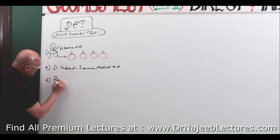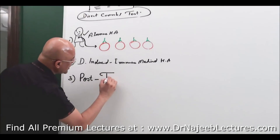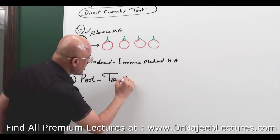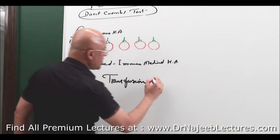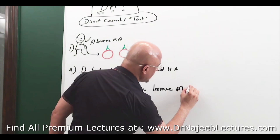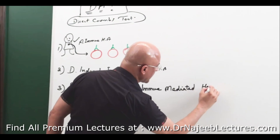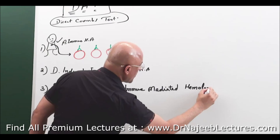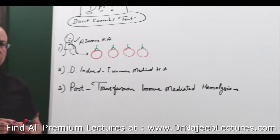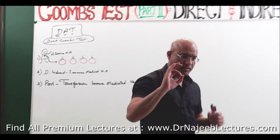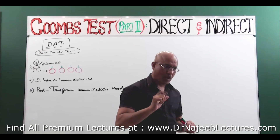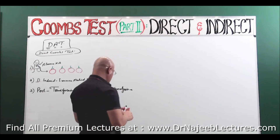What I am talking about is post-transfusion — blood transfusion of course — post-transfusion immune-mediated hemolysis. When we suspect that, we have to detect the antibodies on the RBCs of the patient, or complement. Let me give you a little theory about it.